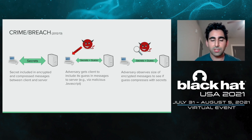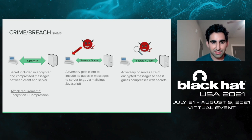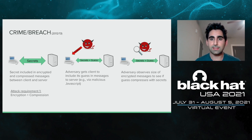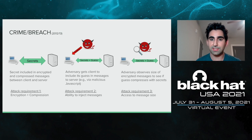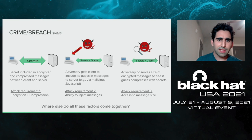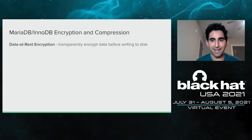There are three requirements to make an attack like this work. First, encryption and compression must be used together, with compression always coming before encryption — encrypting first makes data look random and incompressible. Second, the attacker must be able to inject messages into the compressed and encrypted channel. Third, the attacker must have access to the size of the messages going between parties. The question we want to answer is where else do all these factors come together — and databases are exactly such a place.